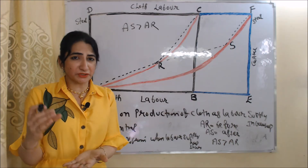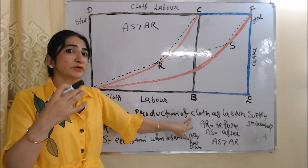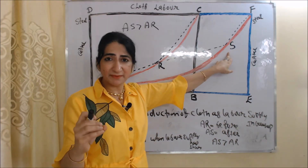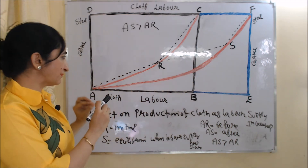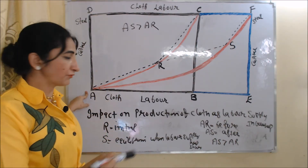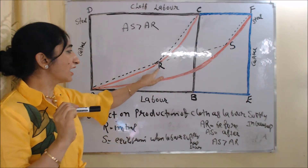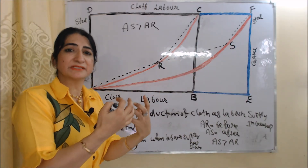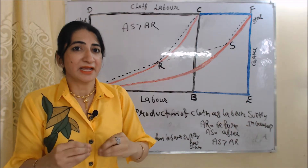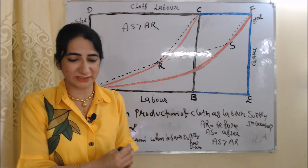Now we will see the impact on production of cloth as labor supply increases. Cloth is labor-intensive — we use labor in larger amount. R is our initial equilibrium point and S is our new equilibrium when labor supply has increased. Initially, the capital-labor ratio of cloth is AR. When labor supply increases, the capital-labor ratio of cloth is AS. You can see the AS line is bigger than the AR line, which shows that as labor supply increases, production of cloth also increases.